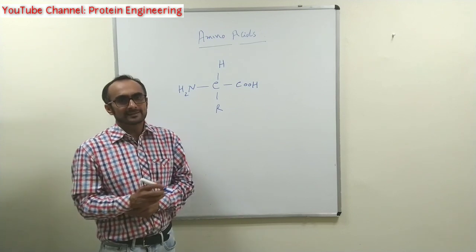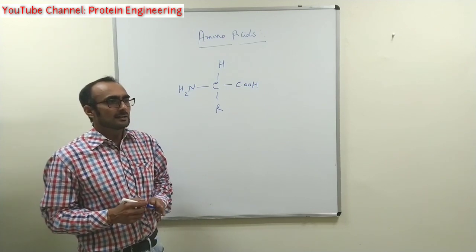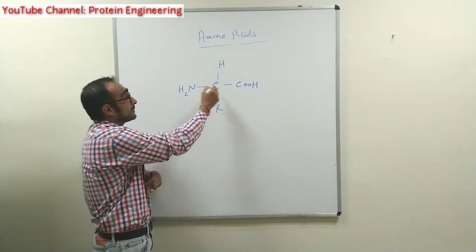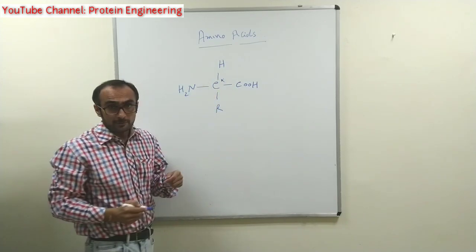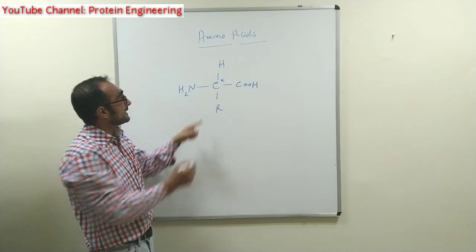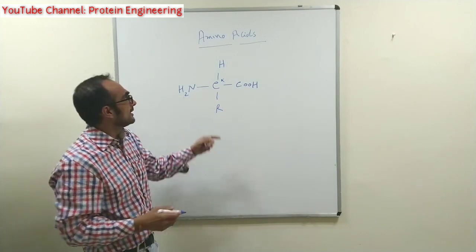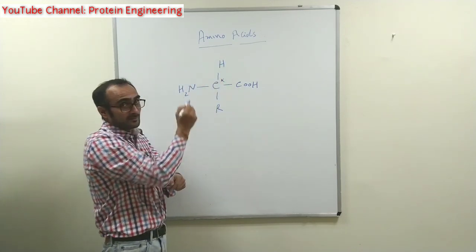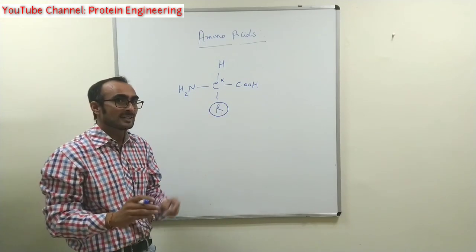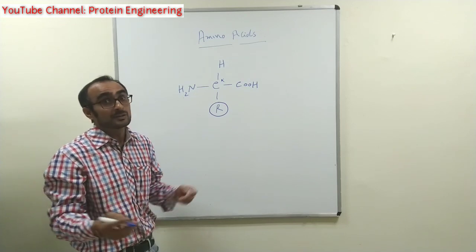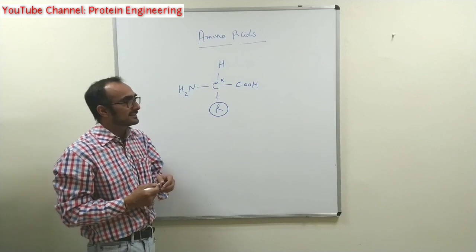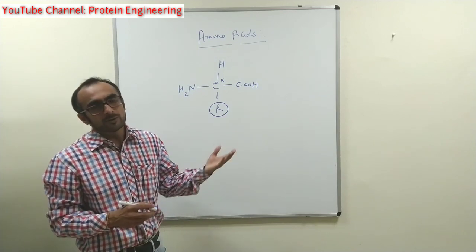In nature there are 20 amino acids, and they have a common structure as well as different R groups. Every amino acid has a carbon atom called the alpha carbon. This alpha carbon is connected to a carboxyl group on one side and an amino group on the other side — that's why the name 'amino acid.' It is also attached to a hydrogen atom and an R group. The R group differs between amino acids, so there are 20 different R groups giving 20 different amino acids that form proteins.